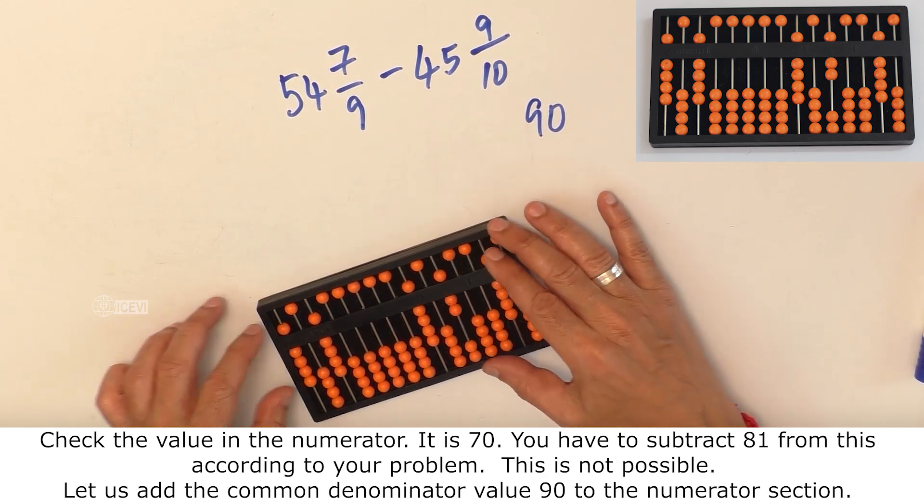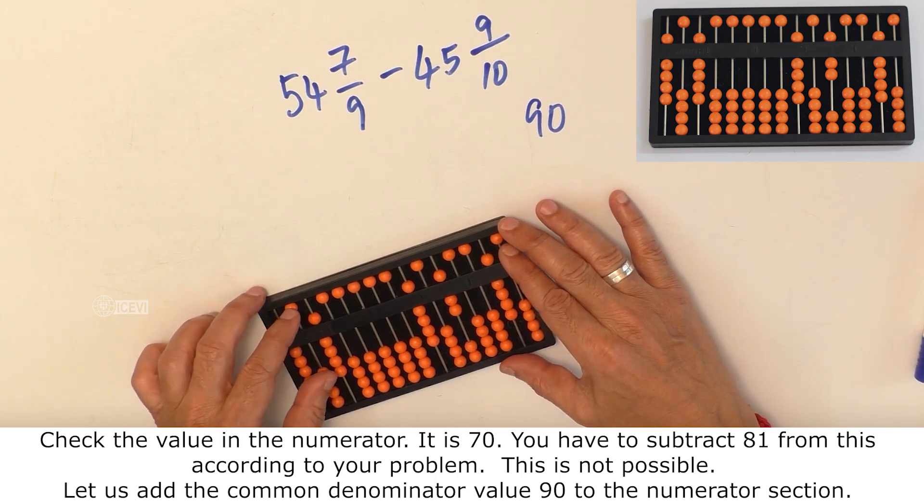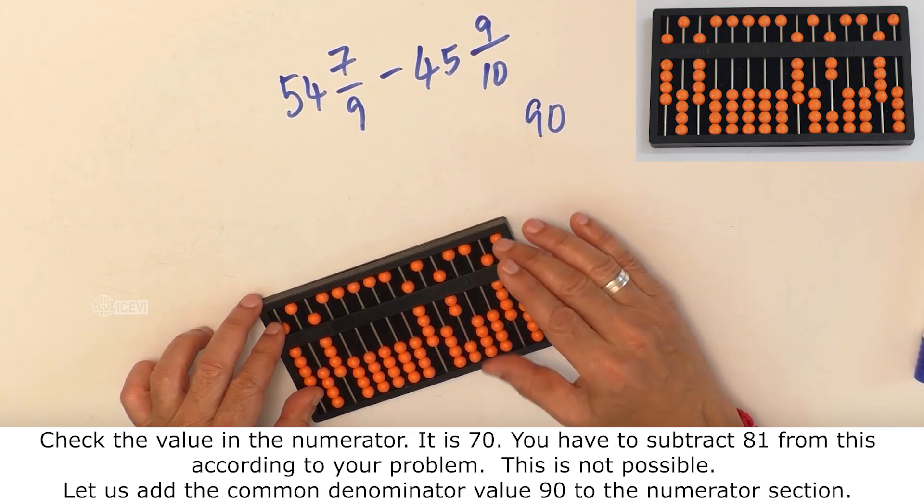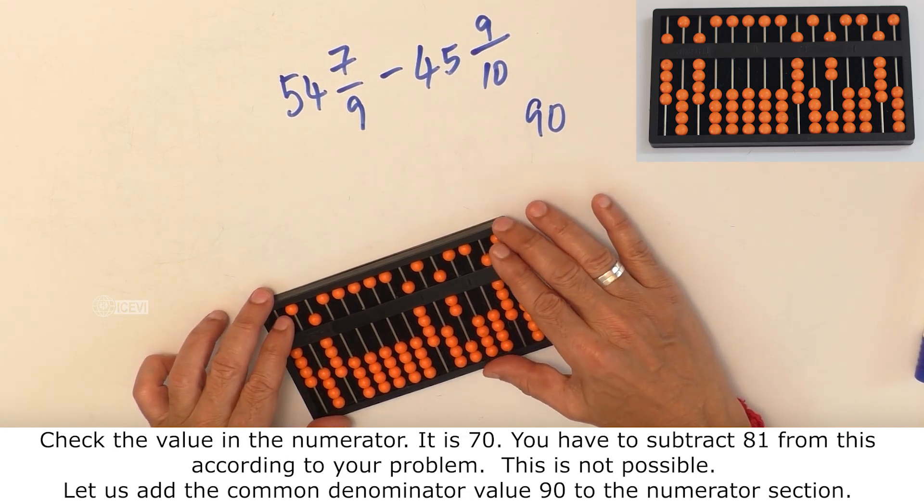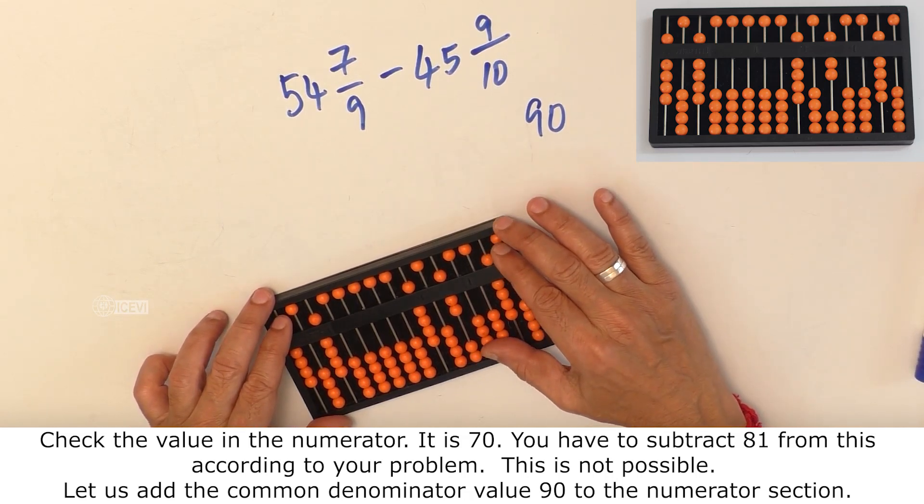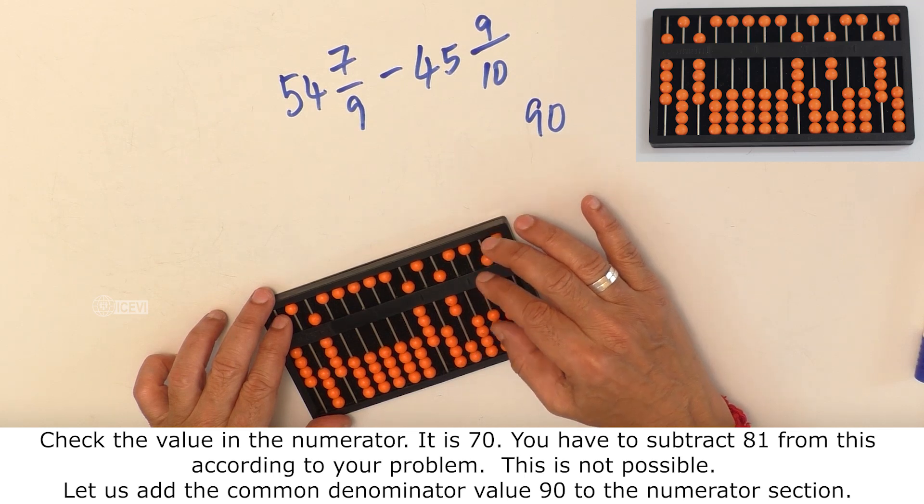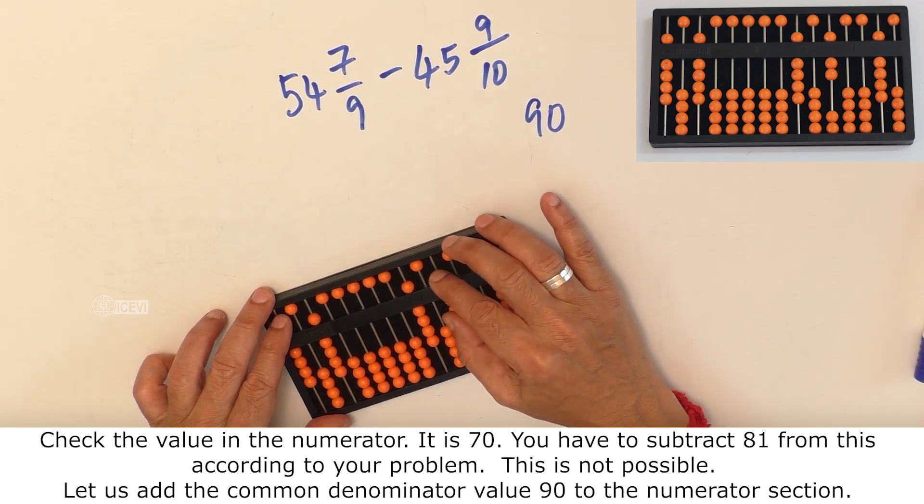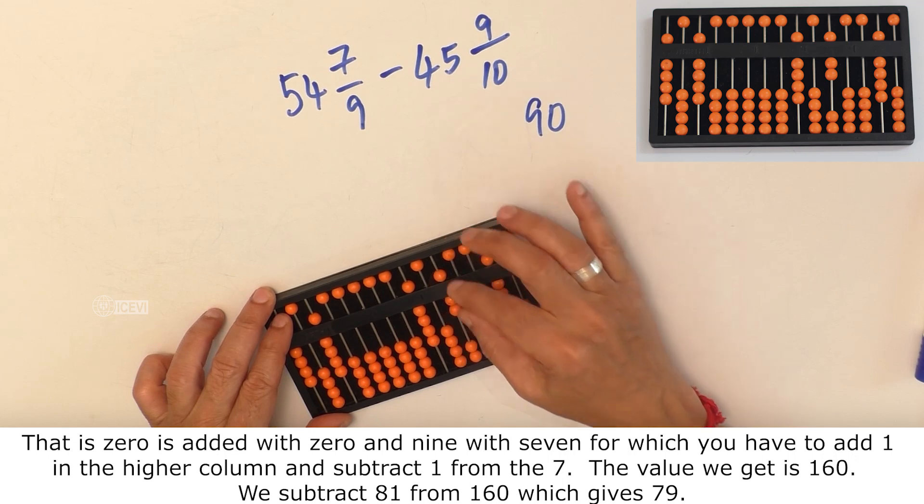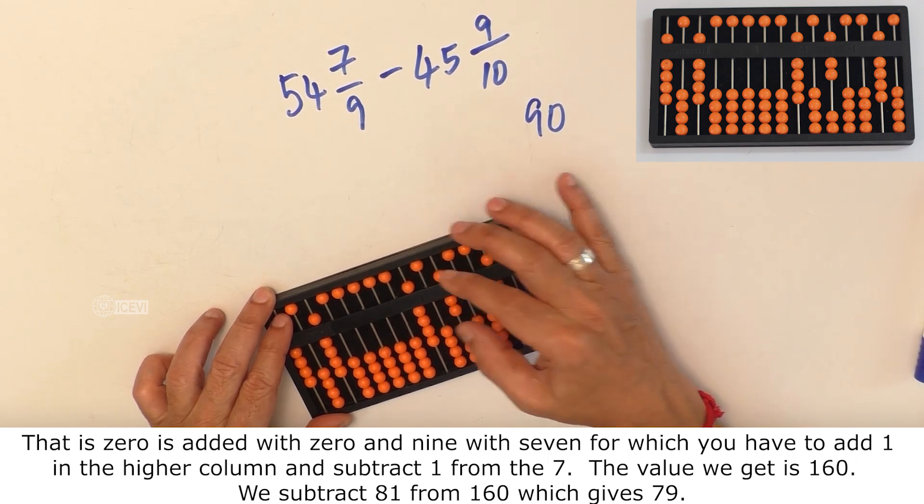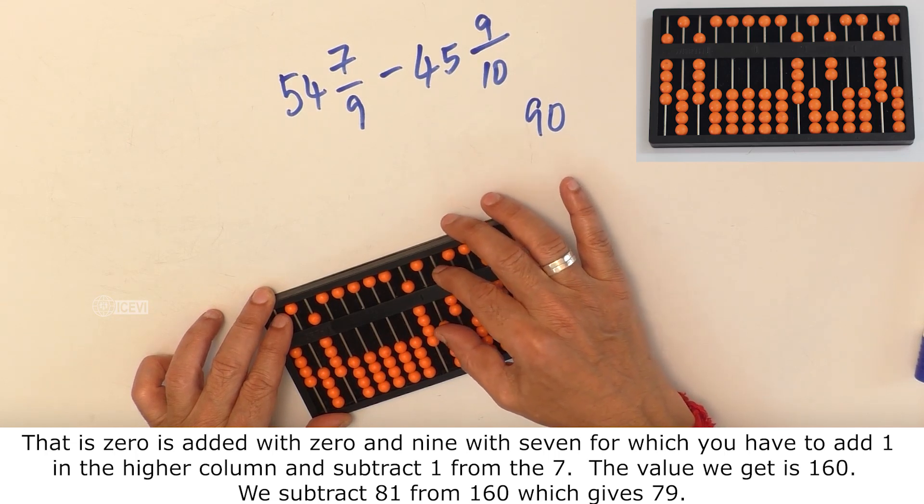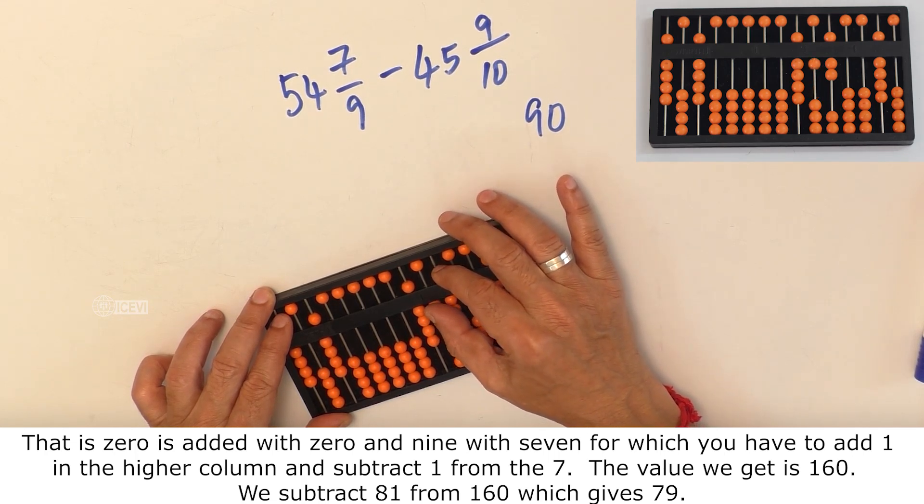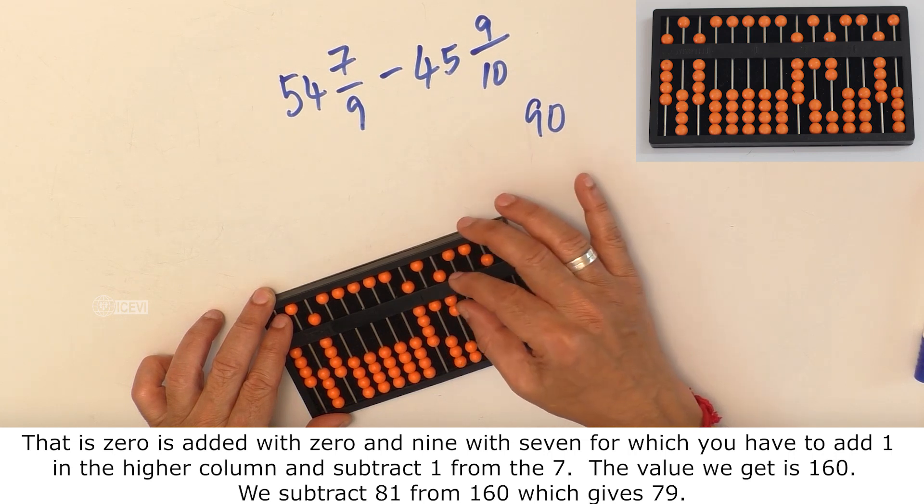Let us add the common denominator value 90 to the numerator section. That is 0 is added with 0 and 9 with 7. For which you have to add 1 in the higher column and subtract 1 from the 7.